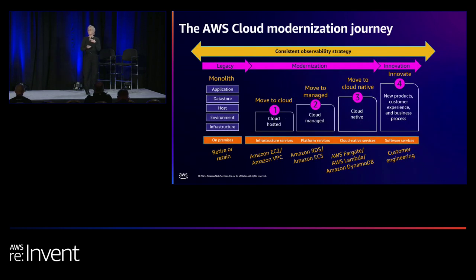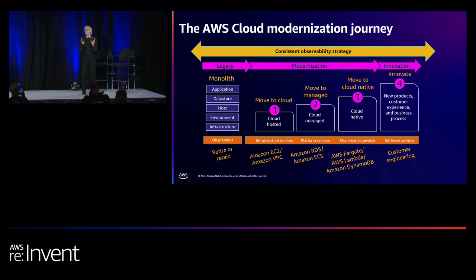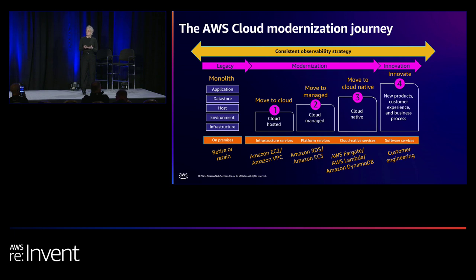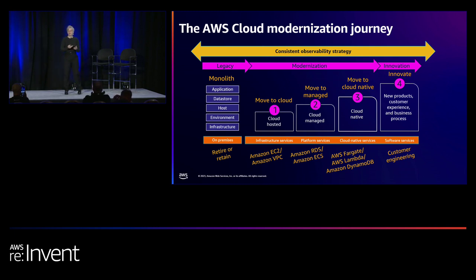Many customers are at various stages in the well-architected journey to AWS. Starting from something very monolithic and on-prem, moving toward cloud native — whether that's a lift and shift right into EC2, all the way to a customer engineering approach where we're driving automation and really accelerating software delivery. The goal is to pull this into the context of how automation specifically with Dynatrace can support this modernization journey.